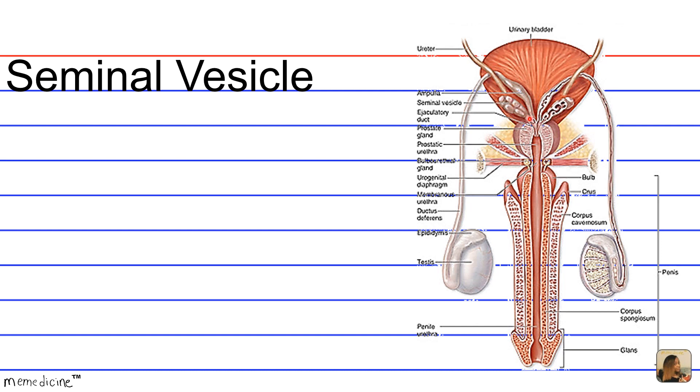So it empties and meets the ampulla of the vas deferens. And it secretes basically a fructose rich fluid, and this provides an energy source to the sperm.